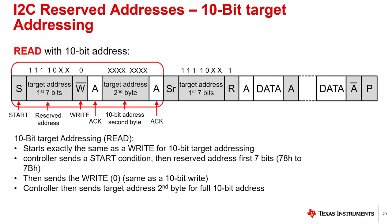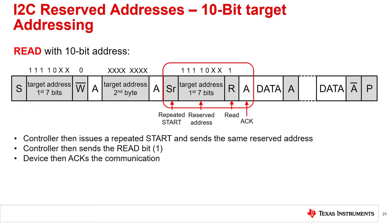Here, we'll show how a controller reads from a device with a 10-bit address. Reading from a 10-bit address device is similar but with added steps. First, there is a start, followed by the reserved address, followed by a 0 for a write bit. This is followed by an acknowledge from all devices that use the reserved address. This is then followed by the target address second byte, and then an acknowledge from the addressed device. Until this point, the communication is exactly the same as a 10-bit address write.